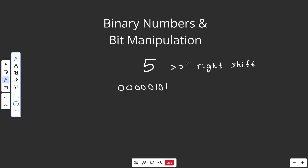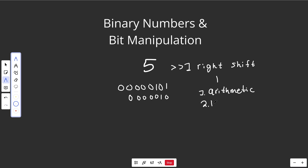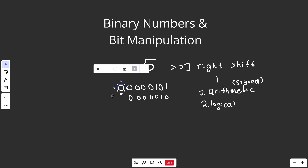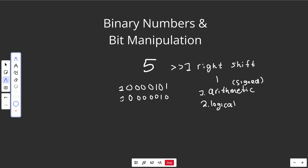Now let's do a right shift. Let's right shift 5 by 1. The bits all shift one position to the right: the 1 at 2 to the 2 moves to 2 to the 1, and the 1 at 2 to the 0 falls off. Now there's an empty space on the left, and what it gets padded by depends on which type of right shift you do. There are two types: arithmetic right shift, also called a signed shift, which keeps the sign of the original number — so if the sign bit was 0 it stays 0, and if it was 1 it stays 1. And logical right shift, which always pads with 0 regardless of the sign.